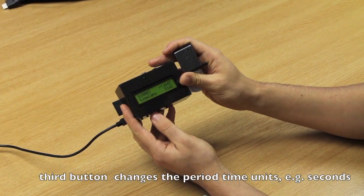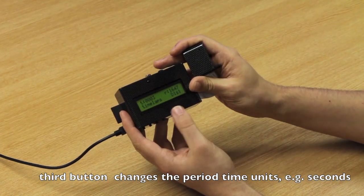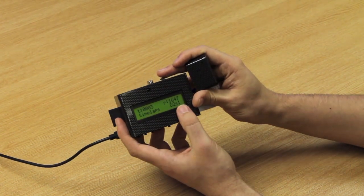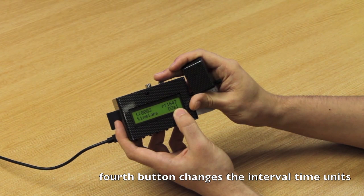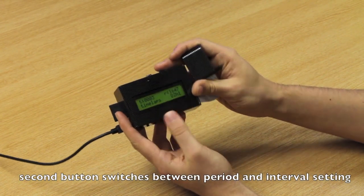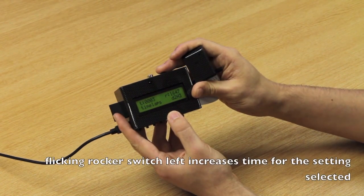We want to set that to days, and we want to set it to two days, and then we can set the interval between each picture. So we set that to hours, and we're going to set that to three hours.